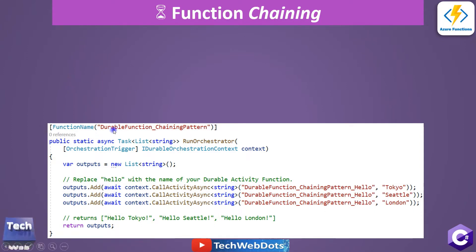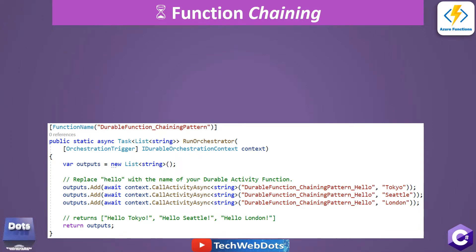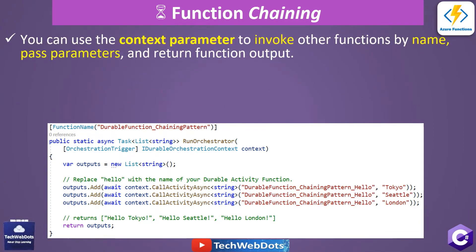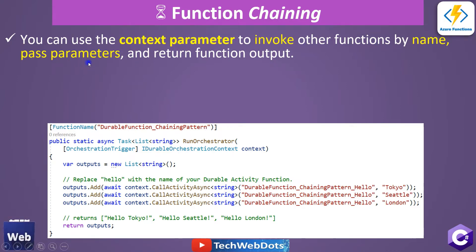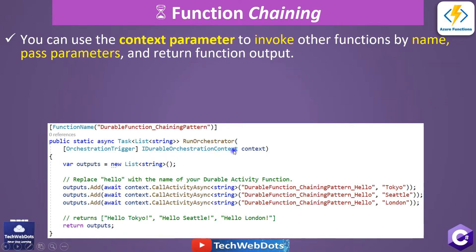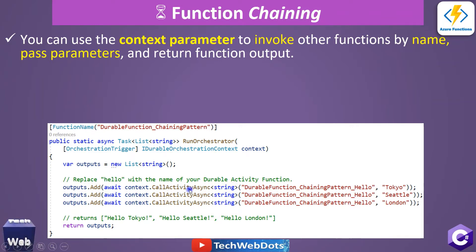When we create the function, it will look something like this. The function name is DurableFunction_ChainingPattern. You can use the context parameter to invoke other functions by name, passing parameters and returning output. You can see the function name is DurableFunction and inside it we have an IDurableOrchestrationContext. This context is used to call activity functions - those functions perform some activity, and we are calling three of them one by one.